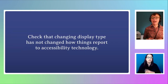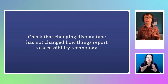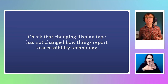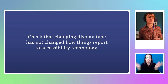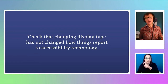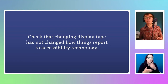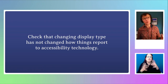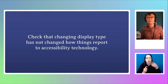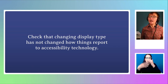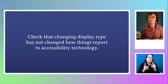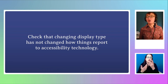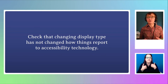The other thing to check — and I've got a link in my resources about this — is to check that changing display type, whether you change things to flex or display: grid or anything else, make sure that's not changing how things are reporting to assistive devices. Changing display should only change the visual display of things; it shouldn't stop a list being a list, for example. But browsers sometimes get that wrong. So do check that you still have things with their semantic meaning.